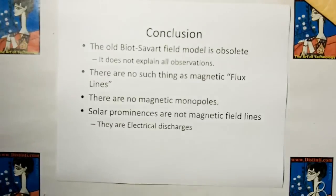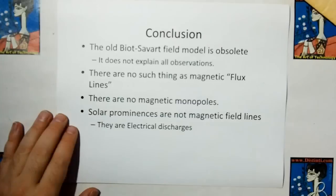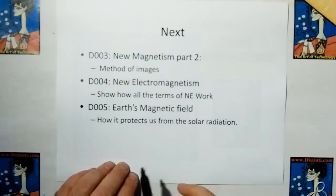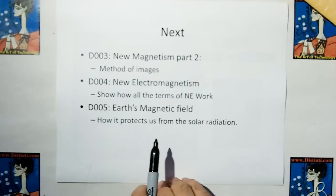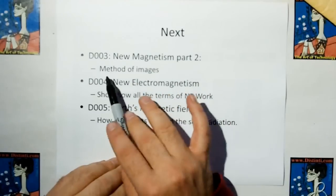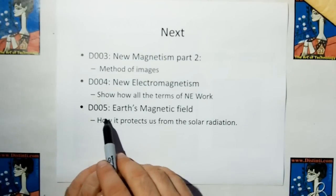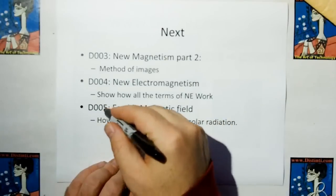So, conclusion of this part is the old Biot-Savart field model is obsolete. It does not explain all the observations. There's no such thing as magnetic flux lines. There are no magnetic monopoles and solar prominences are not magnetic field lines. They are electrical discharges. Next, we're going to do some new electromagnetism videos. We're going to go back for one more ethereal mechanics videos while we wait on the new math construct. In new magnetism part two, we're going to talk about the method of images for how to model an object that is not already magnetized. Then we're going to cover all the other terms of new electromagnetism.